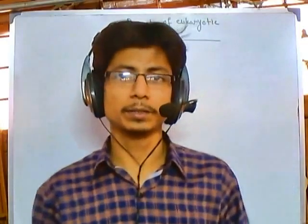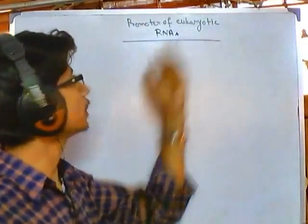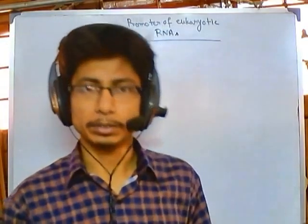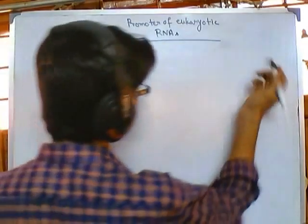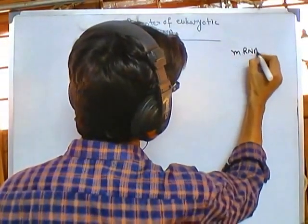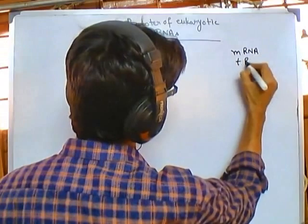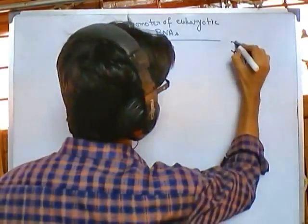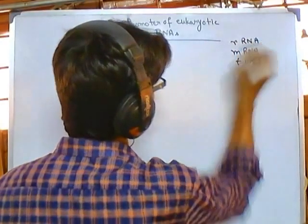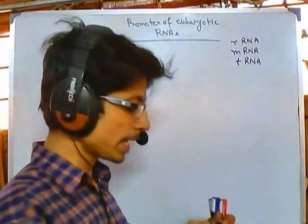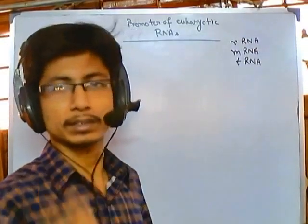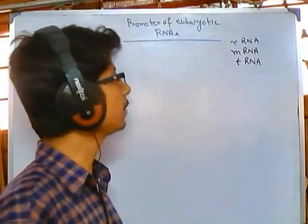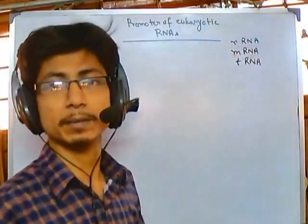Welcome back friends. In this video we will be talking about promoters of eukaryotic RNAs. There are three different types of RNAs found in eukaryotic systems: mRNA or messenger RNA, tRNA or transfer RNA, and rRNA or ribosomal RNA, which is the most abundant in the cell. For transcription of these three RNA types, there are three different RNA polymerase proteins.